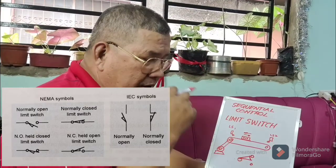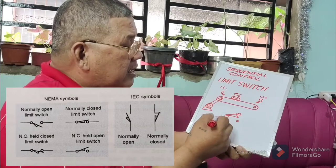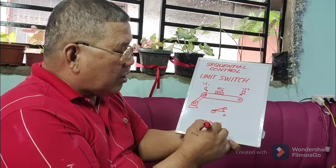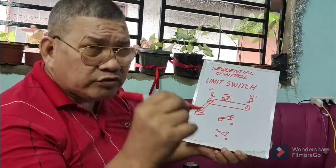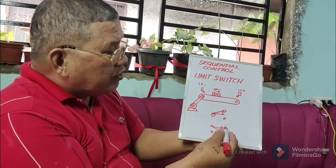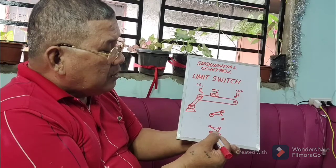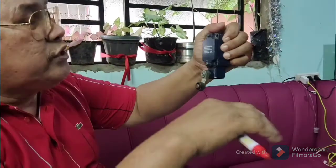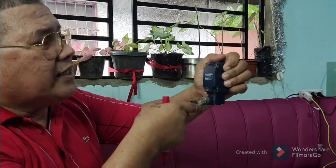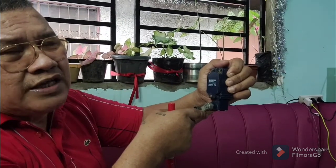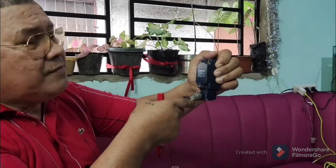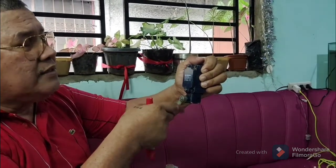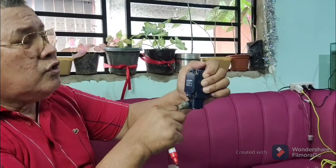So we have the symbol of the limit switch. This is a three-terminal contact, and we also have a four-terminal contact. Later I will let you see the inside of the limit switch. You have normally closed and you have normally open. When this lever is pushed by an object hitting it, the normally open will close and the normally closed will open.